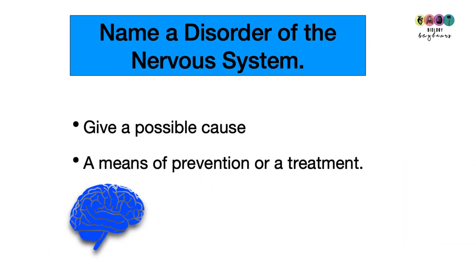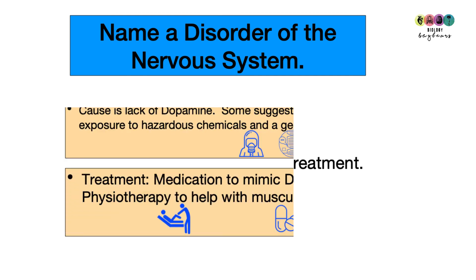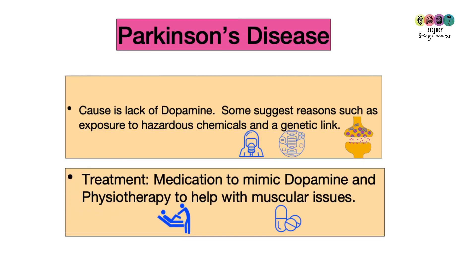Final question: name a disorder of the nervous system, give a possible cause, and a means of prevention or treatment. Parkinson's disease is caused by a lack of dopamine. Possible causes include exposure to hazardous chemicals like pesticides or a genetic link. It is a progressive disease; treatment includes medication to mimic dopamine such as levodopa and physiotherapy to help with muscular issues.